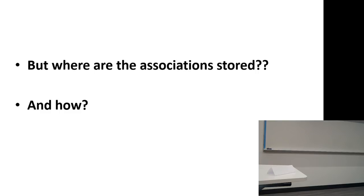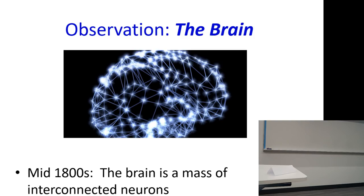Trying to develop ideas on how associations may be formed or stored took a long time. We began coming up with hypotheses around the mid-1800s when people realized that all of these things happen in the brain. And by the mid-1800s, with very good microscopes, people actually realized that the brain is just a mass of interconnected neurons.